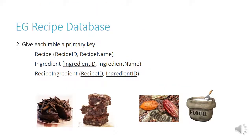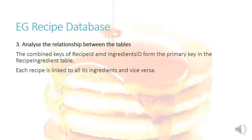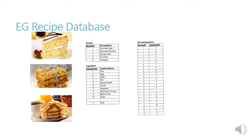We give each table a primary key. For recipe it's recipe ID, for ingredient it's ingredient ID, and in recipe ingredient both of those fields form a composite primary key — recipe ID and ingredient ID. The combined keys of recipe ID and ingredient ID form the primary key in the recipe ingredient table, and each recipe is linked to all its ingredients and vice versa. There are the three tables. In recipe ingredient, chocolate cake is recipe ID 1, with ingredient IDs 1 through 6 alongside recipe ID 1 to show that all six ingredients belong to that recipe.